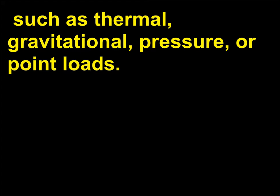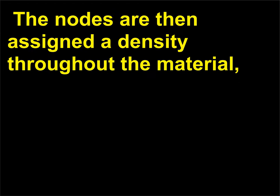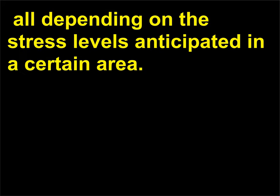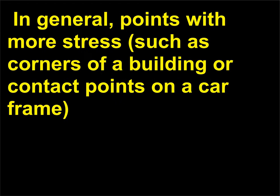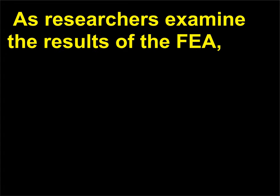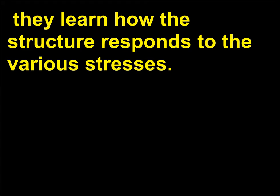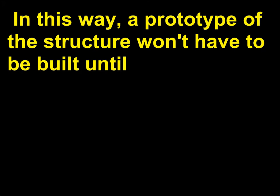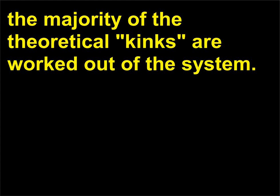The nodes are then assigned a density throughout the material, depending on the stress levels anticipated in a certain area. In general, points with more stress — such as corners of a building or contact points on a car frame — will usually have a higher node density than those with little or no stress. As researchers examine the results of the FEA, they learn how the structure responds to the various stresses. In this way, a prototype of the structure won't have to be built until the majority of the theoretical kinks are worked out of the system.